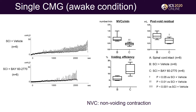These are the results. The number of non-void contractions per voiding cycle was significantly lower in BAY-treated SCI mice than in vehicle-treated SCI mice. These results indicate that sGC activation improved both detrusor overactivity and inefficient voiding after SCI.